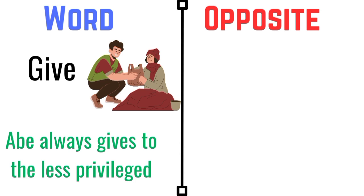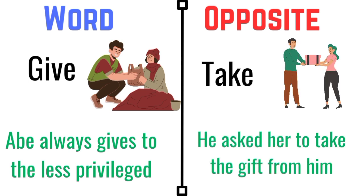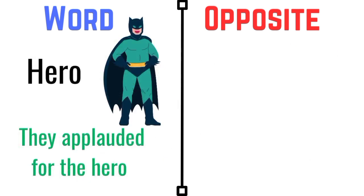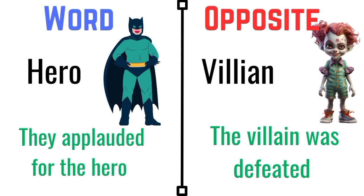Give. Abe always gives to the less privileged. The opposite of give is take. He asked her to take the gift from him. Hero. They applauded for the hero. The opposite of hero is villain. The villain was defeated.